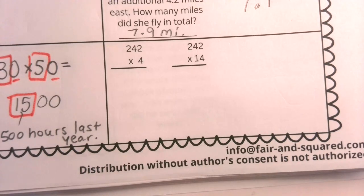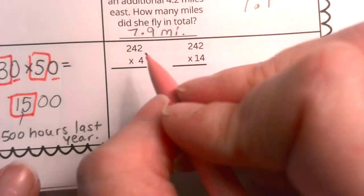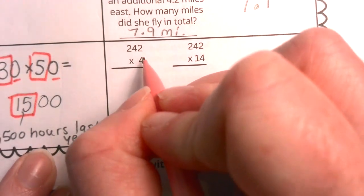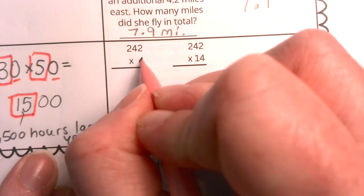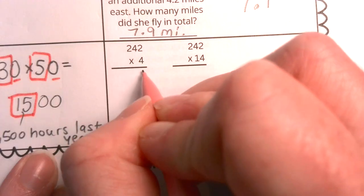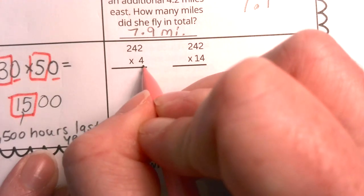So let's try out that standard algorithm. This number four is like the center of this multiplication problem. We're going to multiply it by the two, then the four, then the two. But it all pivots around this.